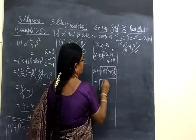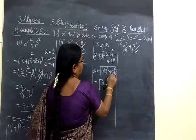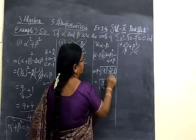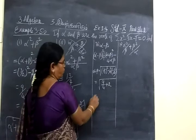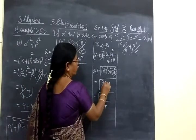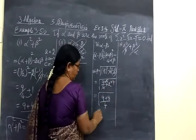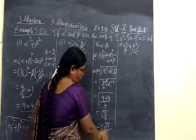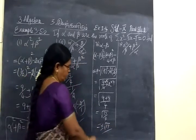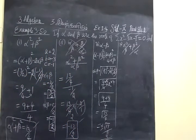So this equals root of 9 by 4, then minus times minus gives plus, so we add 4 times 1 by 2, which equals 2. The LCM is 4, so 9 plus 8 gives 17 over 4. Taking the root gives plus or minus root of 17 by 4. The numerator root gives root of 13, and the denominator root of 4 gives 2. So the answer for the third one is plus or minus root of 13 by 2.